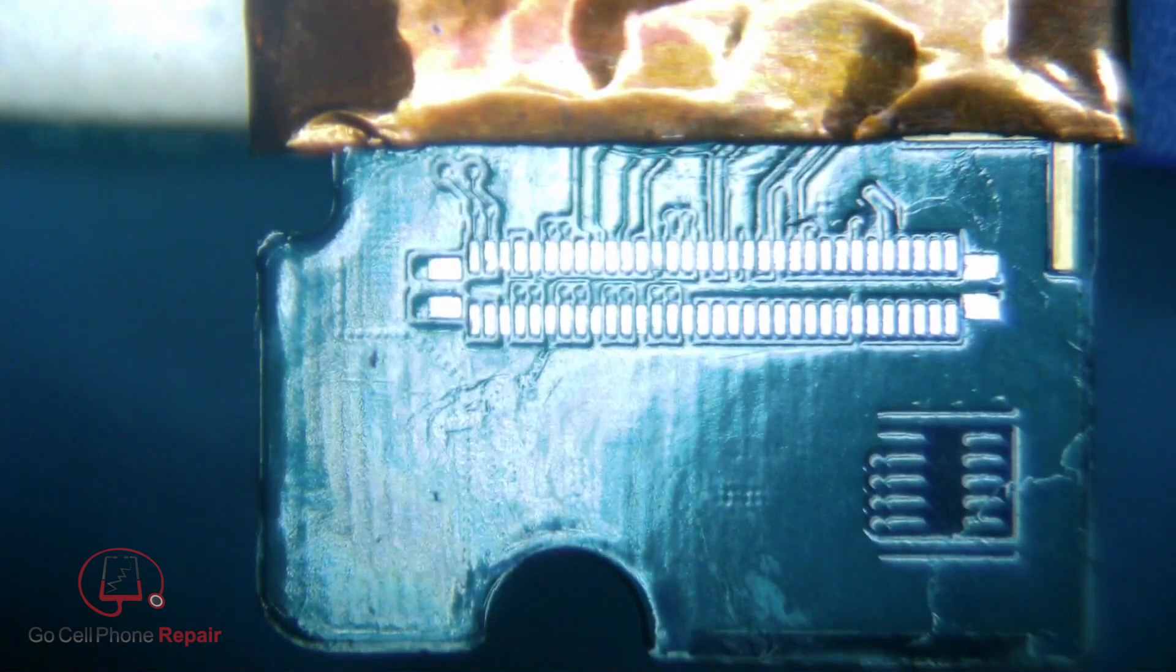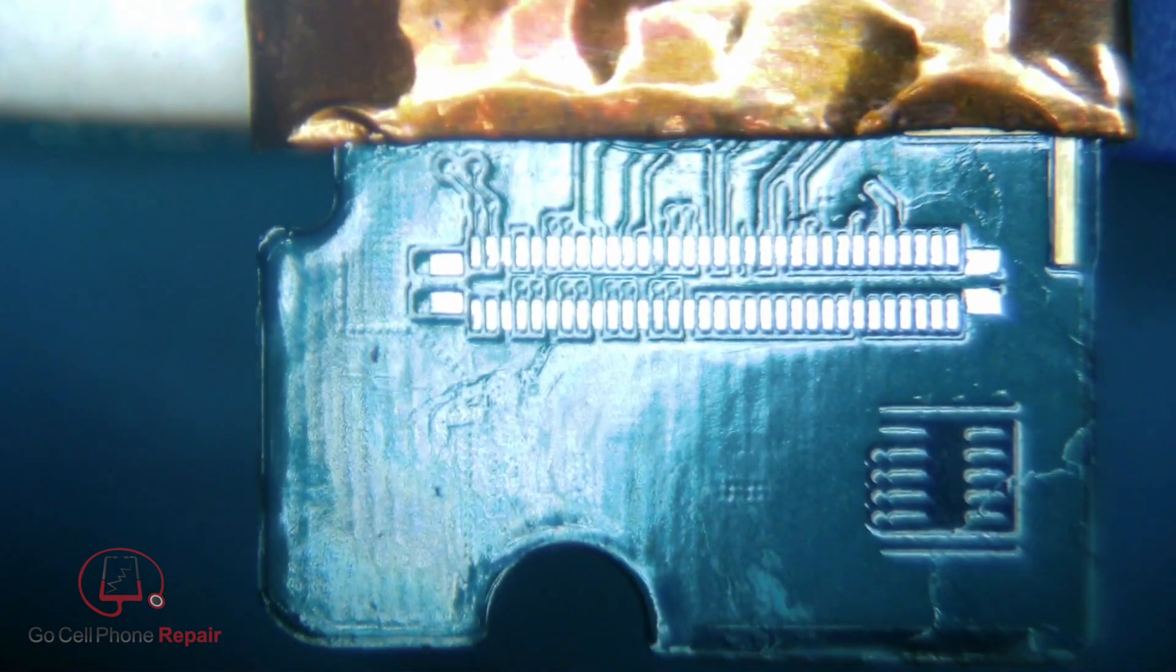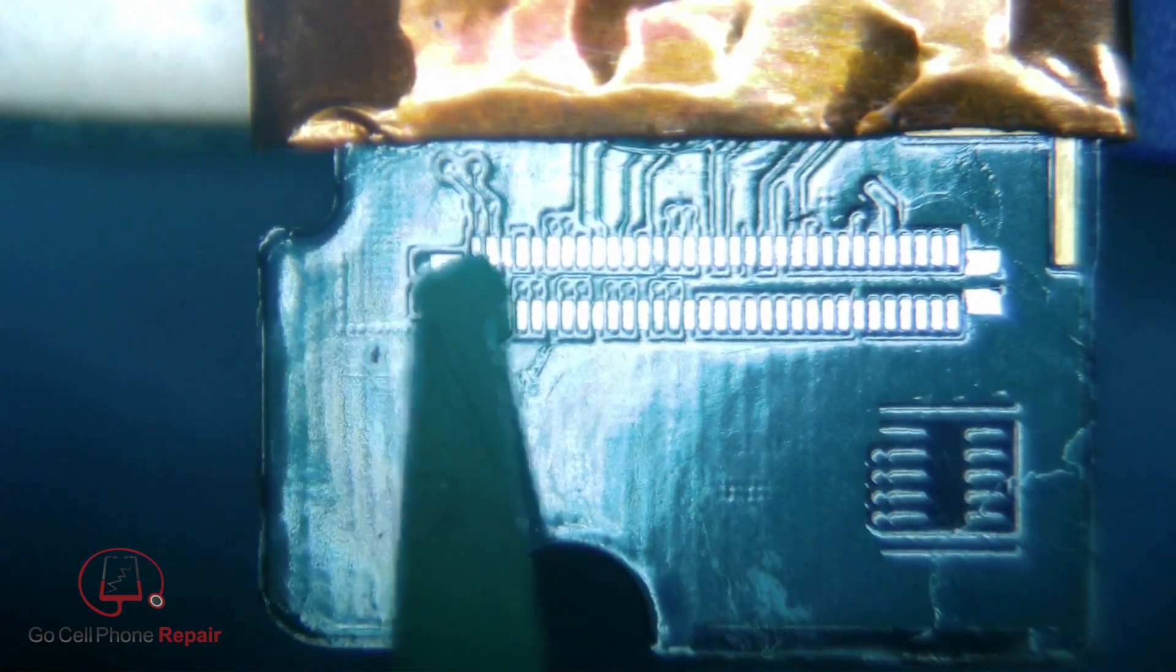We'll put some fresh flux down and then we're going to add leaded solder to all of the points that you see here.